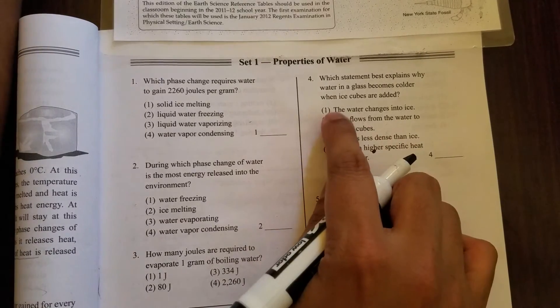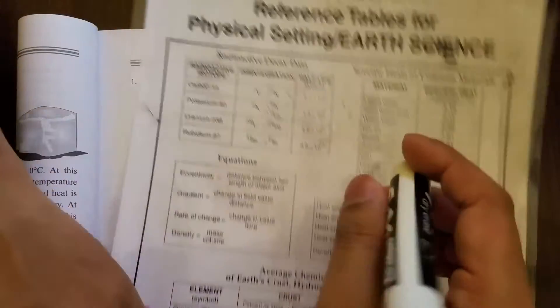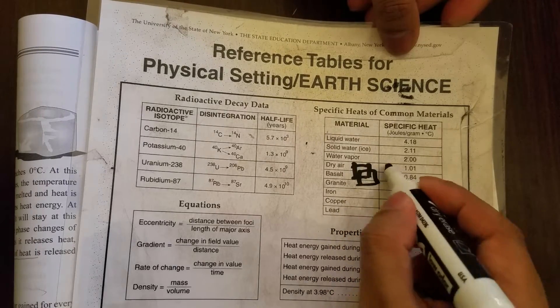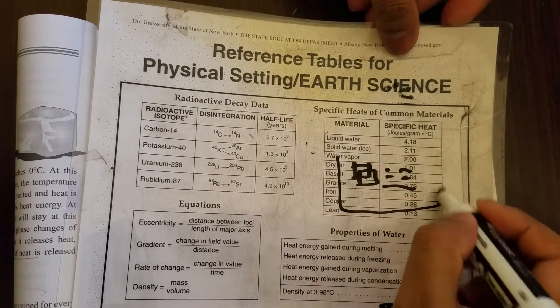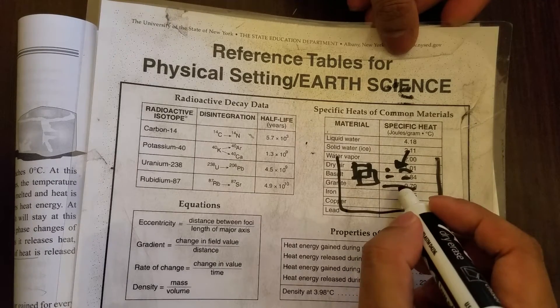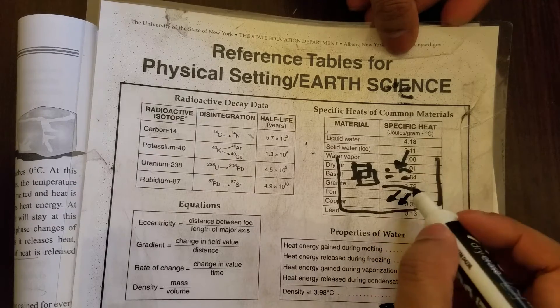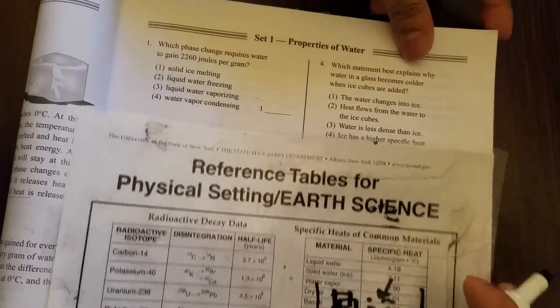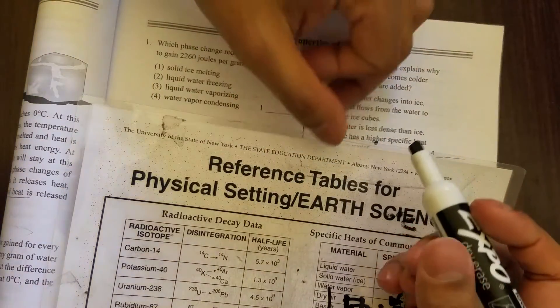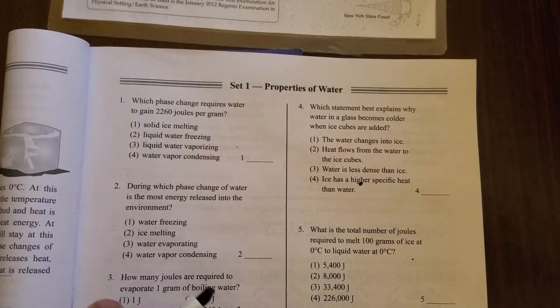So option number two must be correct: heat flows from the water to the ice cubes. Why is that? Because if you have two materials, ice cubes and water in a beaker, water has a higher specific heat so it will start losing its temperature slowly. Heat flows from the water to the ice cubes, from high to low. So I think you have an idea about specific heat.